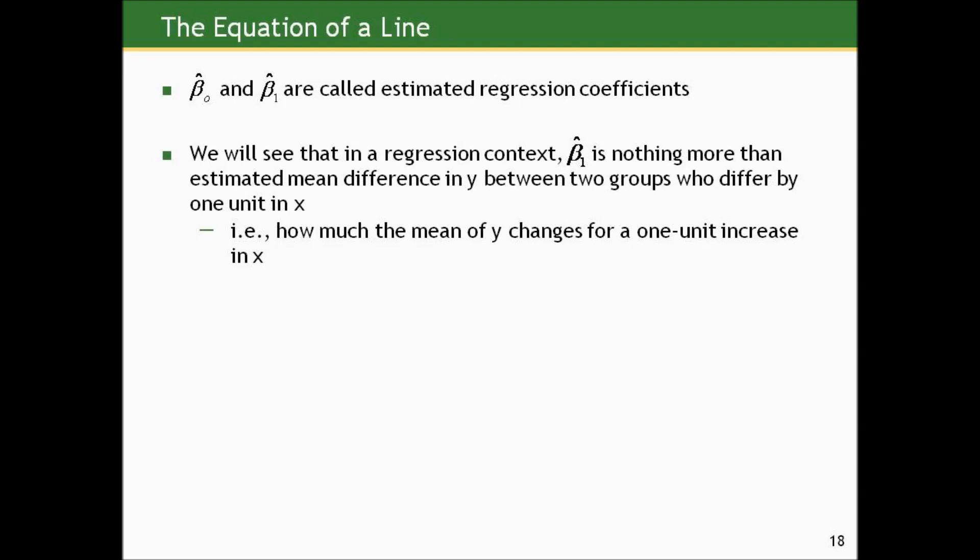We will see that in a regression context, this slope β1_hat is nothing more than an estimated mean difference in y between two groups who differ by one unit in x. In other words, how much the mean of y changes for a one-unit increase in x. We'll put some real numbers on this in the next two sections, where we'll look at examples from real data and give physical meaning to the quantities we've referred to in their Greek letter format.